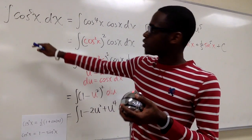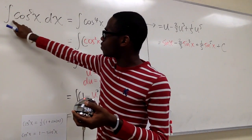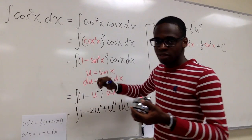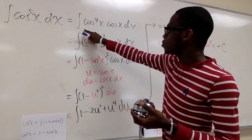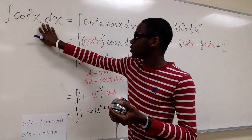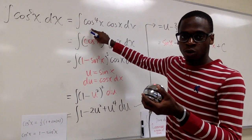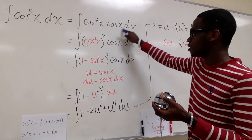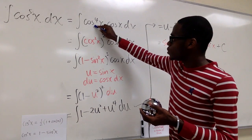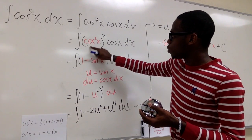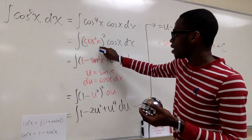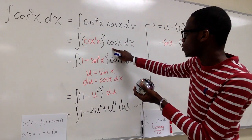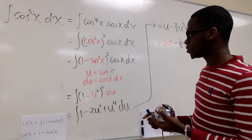Today we want to solve the integral of cosine to the fifth power x dx. The way we're going to do it is we have to break it up into its components, so we break it up into cosine to the fourth power x times cosine to the first power x dx. We want to rewrite this as cosine squared x, all squared, times cosine x dx.